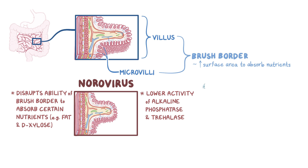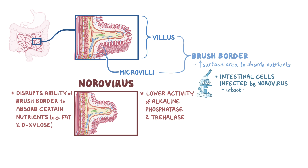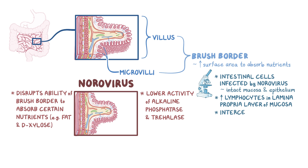Under a microscope, intestinal cells infected by norovirus have an intact mucosa and epithelium, but there are a lot of lymphocytes in the lamina propria layer of the mucosa. Intercellular spaces are also larger, because tight junction proteins that keep the cells together are damaged.